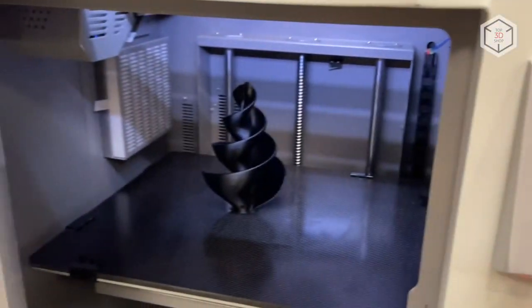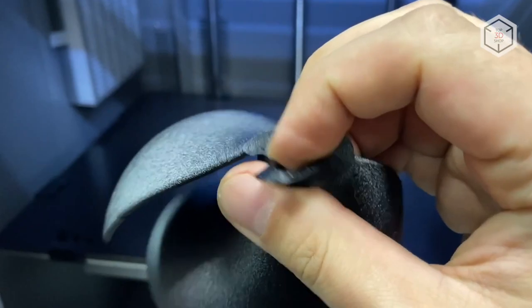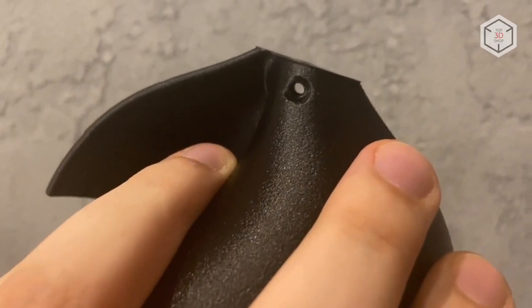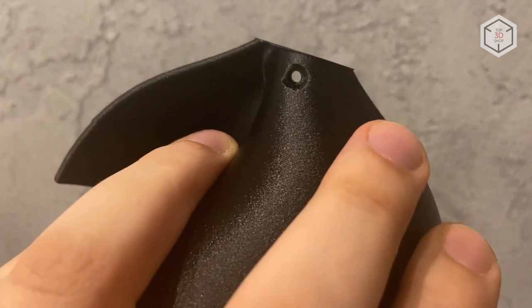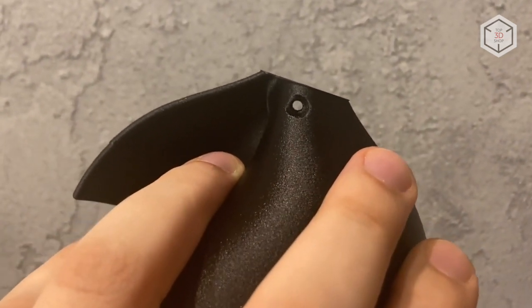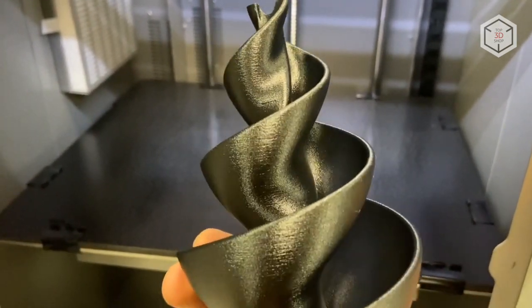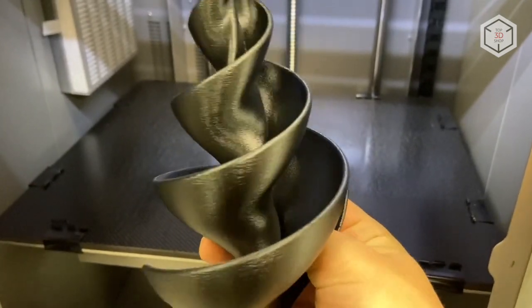The process is complete. Let's assess the result. The brim is removed easily and effortlessly. Let's look at the bottom of the finished model. The hole in the base, which was a point of concern during the preparation, has been printed out perfectly. The result is excellent, with straight even layers. The model turned out to be durable and visually flawless. A decent result, nothing to complain about here.